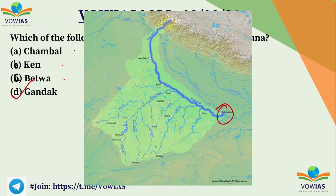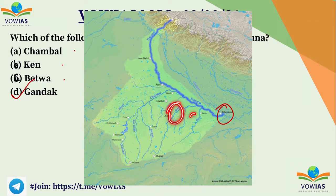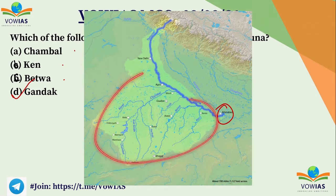If you see the tributaries of Yamuna: Tibanas, Chambal, Betwa, Kane, Sindh — all of these are the tributaries of Yamuna.